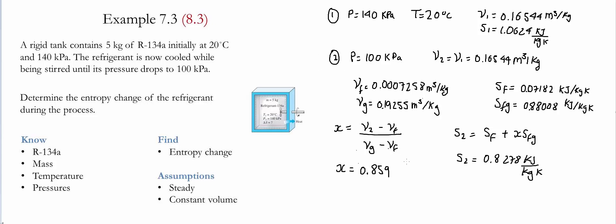Now that we have the two values of the specific entropy at both states, we're going to calculate the change of entropy simply by multiplying the mass by the difference between s2 and s1. The mass we have is 5 kilograms.